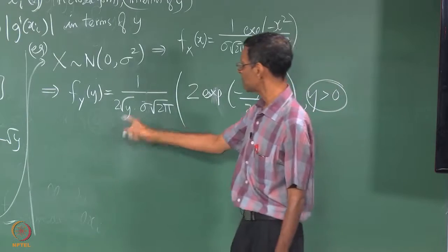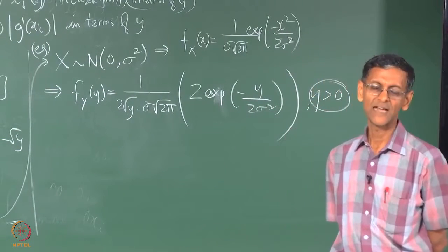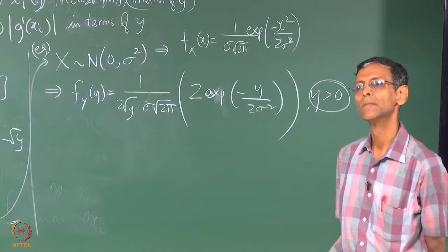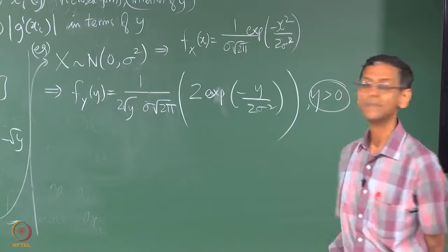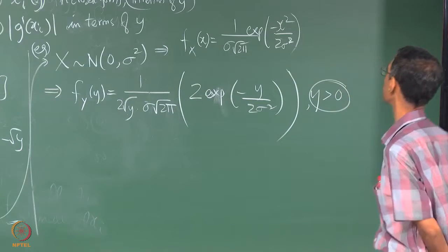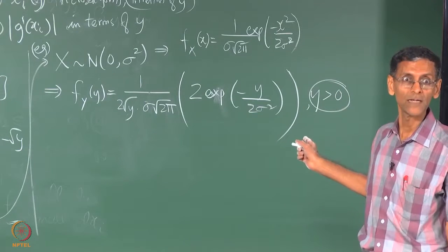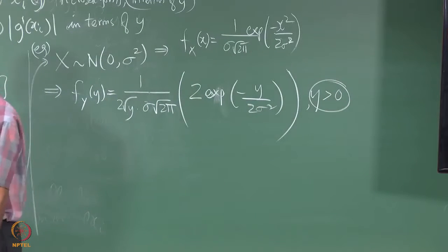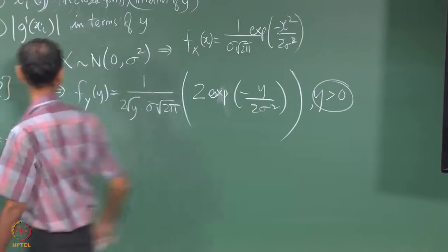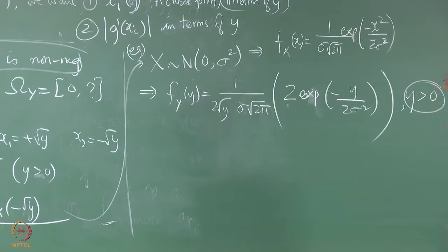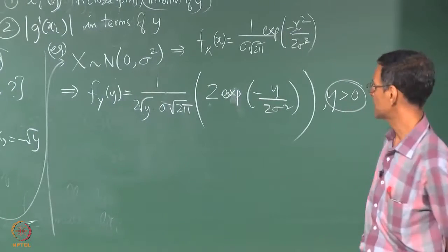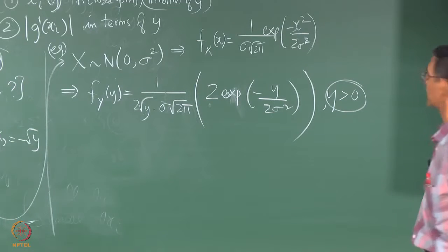Note that this presence of this root y says that actually in this case the density function is undefined at y equal to 0. Is this correct? You all agree with me? These two are the same, here because of symmetry they are the same value, so that is why this two comes. And x square is y, so I don't have to worry about this root y business. It doesn't matter whether I square plus root y or minus root y, I get y.